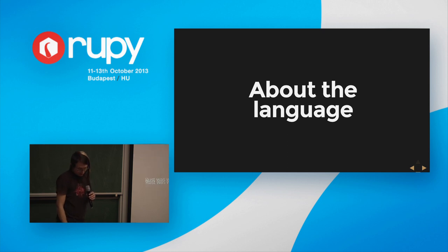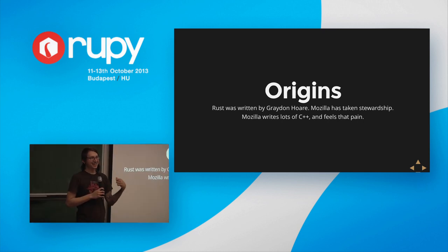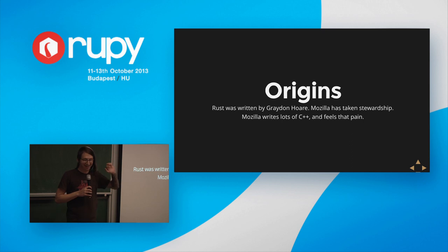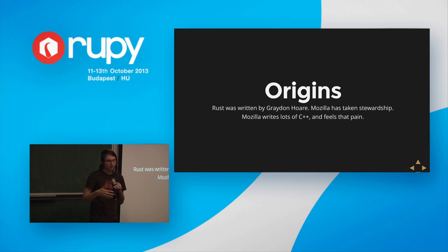About the language: Rust was originally written by Graydon Hoare, a guy who works at Mozilla. He wanted to write a C++ compiler until he started reading more about C++. As he was implementing all the details, he said this is really terrible, so I'm going to invent a new programming language. He actually had some skill at designing programming languages, and spent a couple years making it work. He started telling his coworkers at Mozilla about this new language, and after a couple years he finally had the beginnings of a viable programming language.